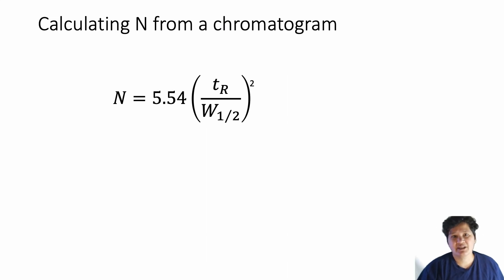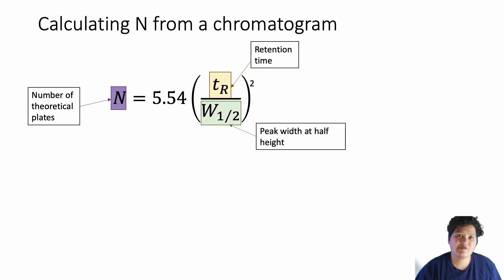We're going to calculate this based on measurements from our chromatogram, the output from our detector. So first, let's look at the equation. N is the number of theoretical plates in our column, which is equal to 5.54 times the retention time divided by peak width at half height, that quantity squared. People are often confused by what peak width at half height means. So let's go into that in a little more detail.